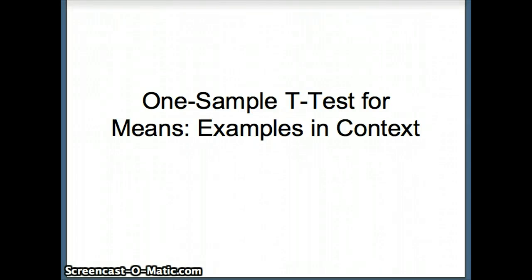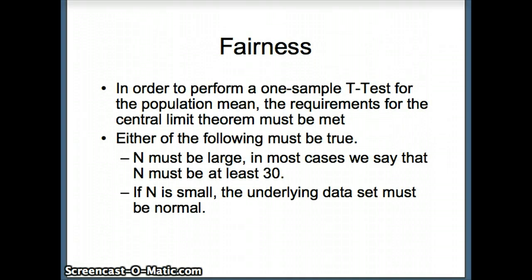This presentation looks at one-sample t-tests for means, focusing on examples in context. To establish fairness and perform a one-sample t-test for the mean, we must satisfy the conditions of the central limit theorem. Either n must be large, that is more than 30, or in the case that n is small, the underlying data set must be normally distributed.